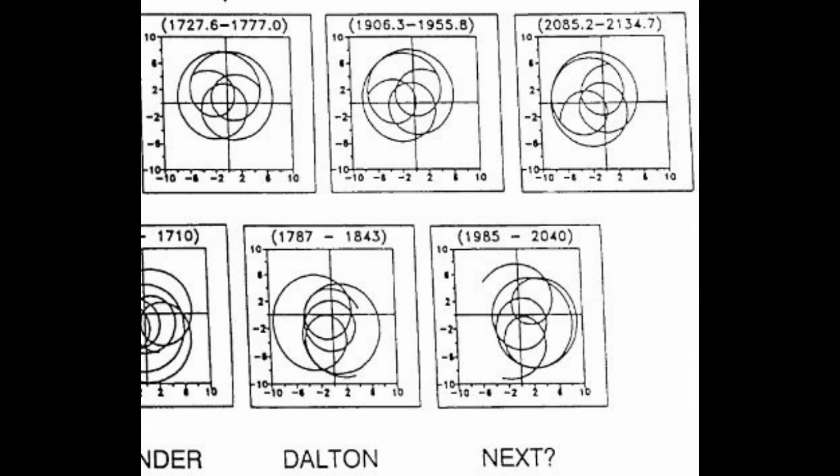So the Dalton minimum. And then tri-foil from 1906 to 1955. And then from 1985 to 2040. So we're in that currently, obviously. We're in the center of that. And then the next tri-foil is predictable. This is a repeatable pattern. So they know it's going to be between 2085 and 2134. That's what it's going to look like.